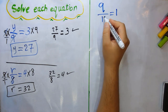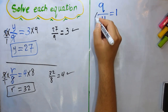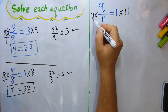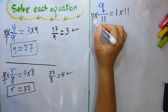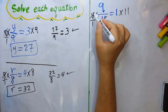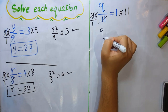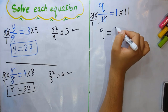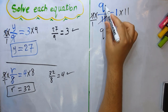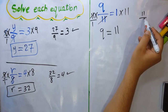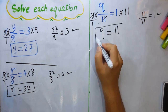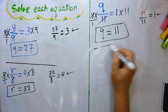Next: q/11 = 1. To remove 'divide by 11', we multiply both sides by 11. Writing 11 as 11/1, cancel 11 up with 11 down, leaving q. On the right: 1 × 11 = 11. So q = 11. Check: 11 ÷ 11 = 1. Correct!